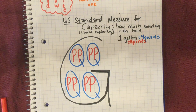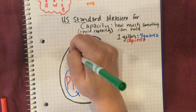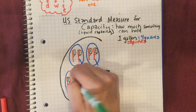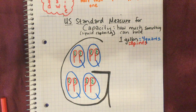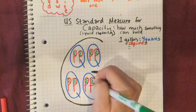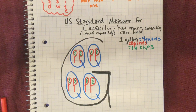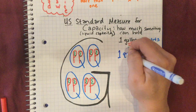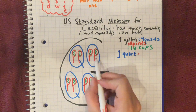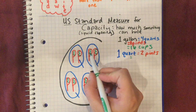Finally, each pint has two cups in it. So one gallon holds one, two, three... sixteen cups total. That means one quart is two pints and four cups. Make sure you have this recorded: one gallon equals four quarts, eight pints, sixteen cups.